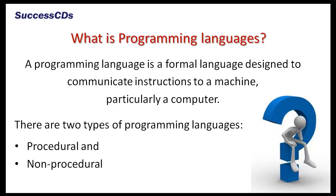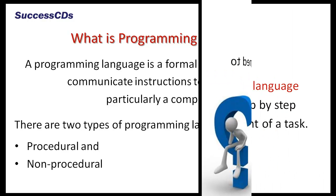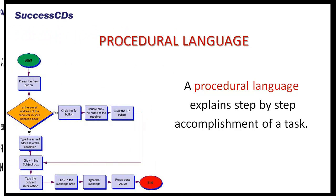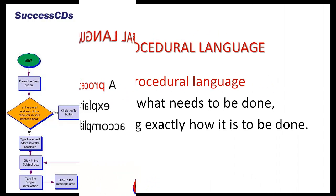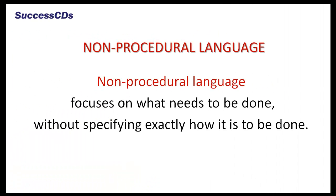There are two types of programming languages: procedural and non-procedural. Procedural language is a language which explains step-by-step accomplishment of a task. Non-procedural language focuses on what needs to be done, without specifying exactly how it is to be done. Although early programming languages were completely procedural, today there are several powerful and user-friendly non-procedural languages.